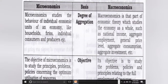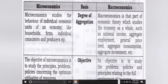Macroeconomics is the part of economic theory which studies the economy as a whole — जैसे national income, aggregate employment, unemployment, general price level, aggregate consumption, और aggregate investment। The objective of microeconomics is to study the principles, problems, and policies concerning the optimum utilization of resources — यानि resources का fuller या optimum utilization किस तरह से करें।